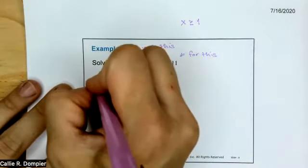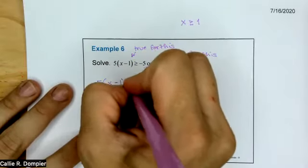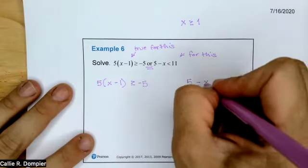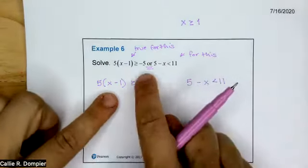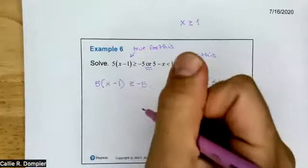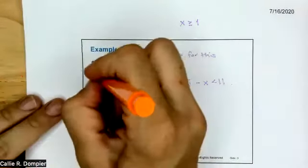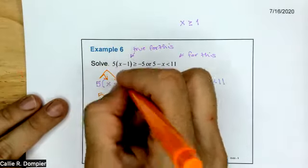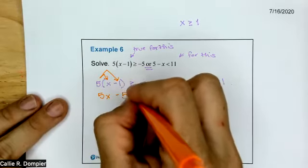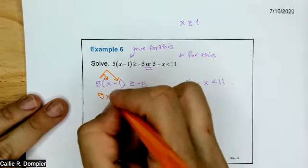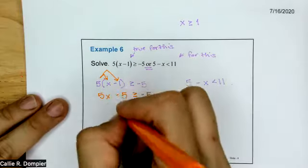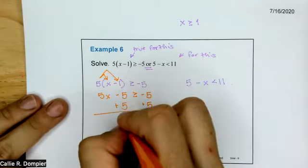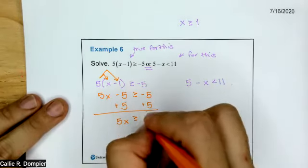So now we just have five times the quantity x minus one is greater than or equal to negative five, and five minus x is less than eleven. It's an or set of inequalities. You're going to want to distribute the five to the x and to the negative one: five times x is 5x, five times negative one is minus five, greater than or equal to negative five. Since we're subtracting five, we're going to add five to both sides. 5x is greater than or equal to zero.